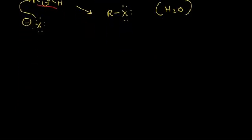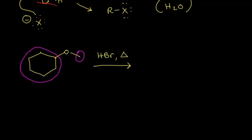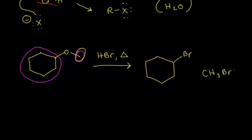Let's do an example of the acidic cleavage of ethers. We'll start with an ether and react it with excess hydrobromic acid and heat things up. When we think about our products, we know that the ether is going to go away and we're going to get two alkyl halides. So we just need to find our alkyl groups. Here's one alkyl group, and here's the other alkyl group. We turn those alkyl groups into alkyl bromides since we're using hydrobromic acid. So one alkyl halide would be bromine attached to the ring, and the other alkyl halide would be the methyl group attached to bromine — methyl bromide. We'd also produce water, but the major organic products are these two alkyl halides.